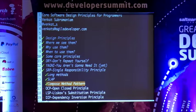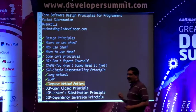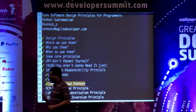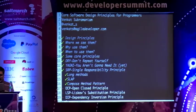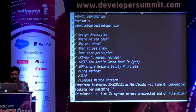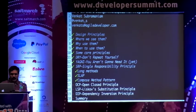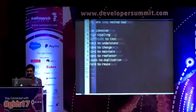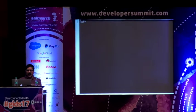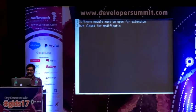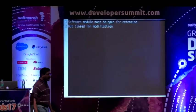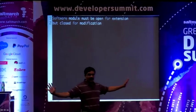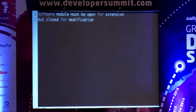We talked about the single responsibility principle and it's really about focusing on the right abstraction responsibility. The next principle was created by Bertrand Meyer — it's called the Open-Closed Principle. The Open-Closed Principle says: a software module must be open for extension but closed for modification.